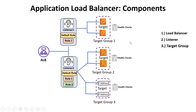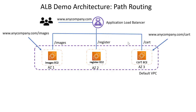Now that we know the components of the Application Load Balancer, let's jump into the AWS Management Console and see how we put all these pieces together to make a workable solution. Before we start configuring, let's discuss the architecture we are going to use so you have a visual impression. We are going to configure three EC2 instances to simulate an e-commerce website — delivering images from one server, a registration page from another, and a cart from a third server. This closely imitates a microservice architecture.